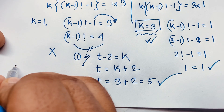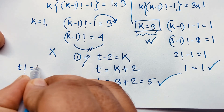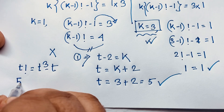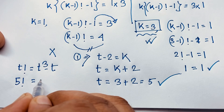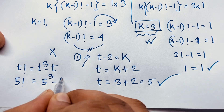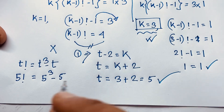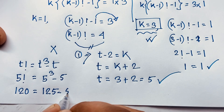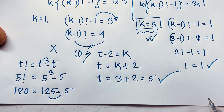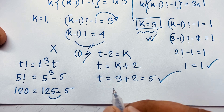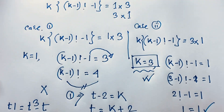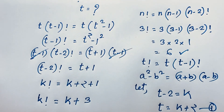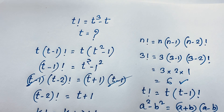Let's check our answer. t factorial equals t to the power 3 minus t. With t = 5: 5 factorial equals 5³ minus 5, which is 120 = 125 - 5 = 120. Left-hand side and right-hand side are equal. So we found in this math Olympiad question that t = 5. Thank you all. If you enjoyed this video please subscribe to my channel for other interesting videos. Goodbye, take care.